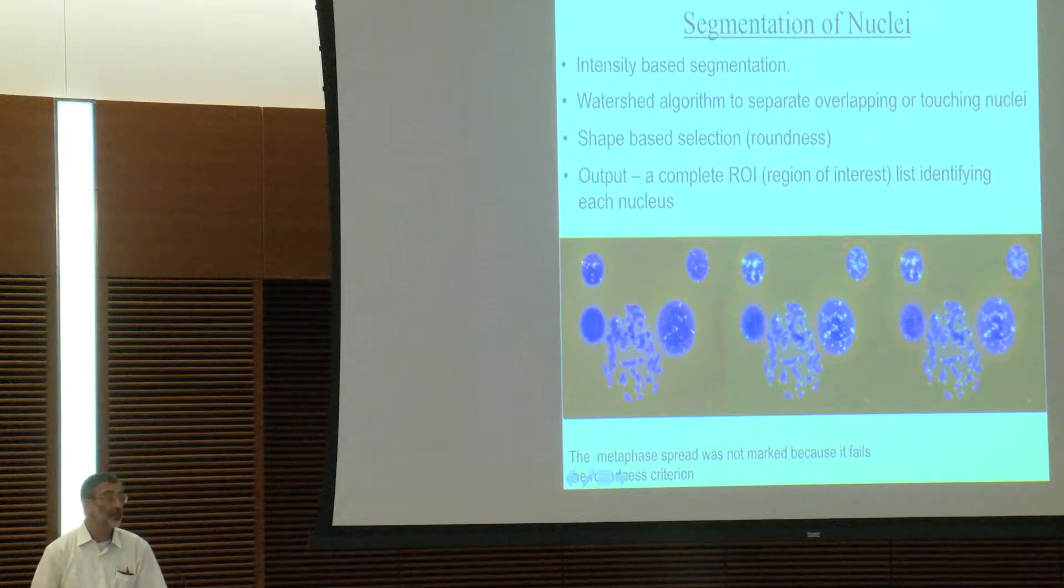We then segment the nuclei. That's actually very easy to do. DAPI segmentations are wonderful. If those were the only ones I had to do, I'd be a happy camper, but probably out of business. But I'm just showing that there are roundness criteria that we use to get rid of artifacts, and this particular slide was nice because we also had a metaphase spread. That's what you see over here, and the metaphase spread is rejected because it's not nice and round and so on. So we can reject things like that.